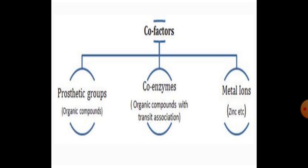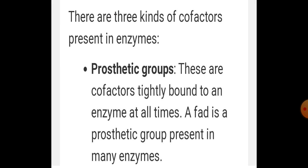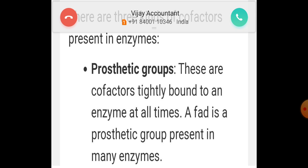Let's first study prosthetic groups. Prosthetic groups and coenzymes are both organic compounds. Prosthetic groups are organic compounds that can be distinguished from other cofactors because they are tightly bound to the apoenzyme. The enzyme can only show its activity if this prosthetic group is present. For example, peroxidase and catalase are enzymes that catalyze the breakdown of hydrogen peroxide.